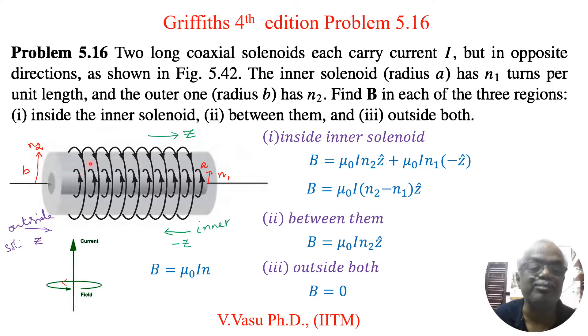What about between them? Between them you will have a contribution only from the outer solenoid. That is B is equal to mu naught I n2. This is positive Z direction. So I have mentioned just Z hat.